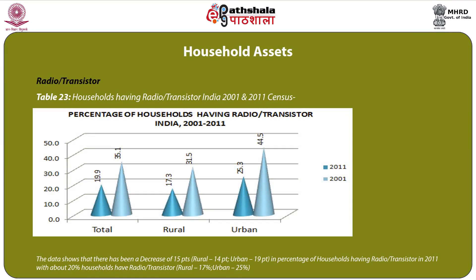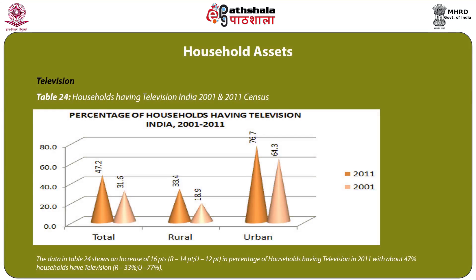Moving to household assets. Regarding radio or transistor, the data shows a decrease of 15 points (rural 14 points, urban 19 points) in percentage of households having a radio or transistor, with about 20 percent of households having radio or transistor in 2011 (rural 17 percent, urban 25 percent). Table 24 covers households having television in 2001 and 2011. The data shows an increase of 16 points (rural 14 points, urban 12 points), with about 47 percent of households having television in 2011 (rural 33 percent, urban 77 percent).